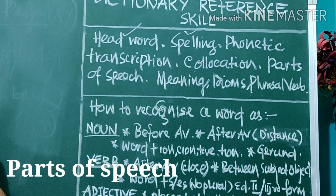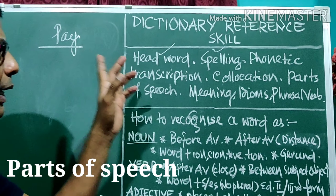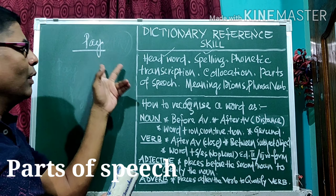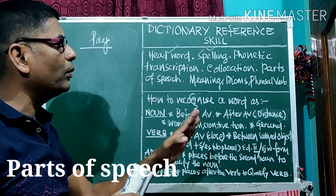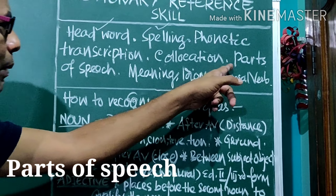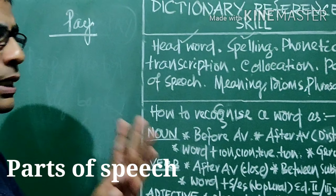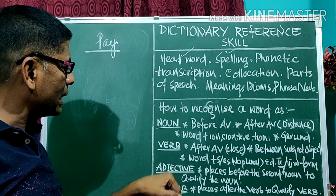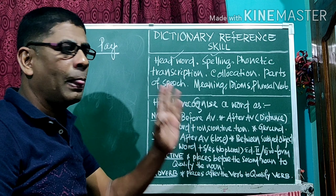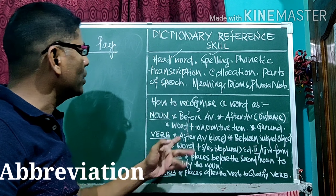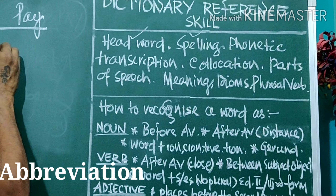Then, parts of speech. We can get the meaning of a word in different ways. Sometimes we get the meaning as a noun, as a verb, as an adjective, as an adverb, or some other part of speech. We have to know the abbreviations to identify the word used as noun, verb, adjective, adverb, etc. So we have to remember the abbreviations — you can get them from the dictionary.